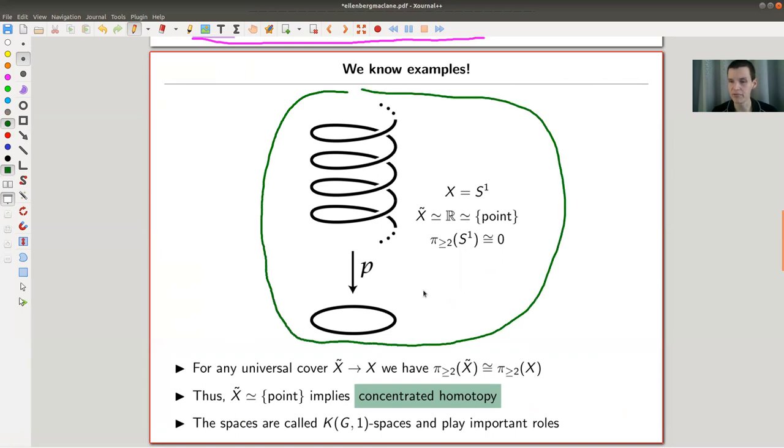And we actually do know examples of those spaces from the fundamental group, which is of course π_1. So here is an example: you have S^1 of course, and it has universal cover R. And whenever you know that there's a kind of general statement, which is very nice actually, so whenever you know for any universal cover, the universal cover has the same higher homotopy groups, so from 2 onwards as your original space.